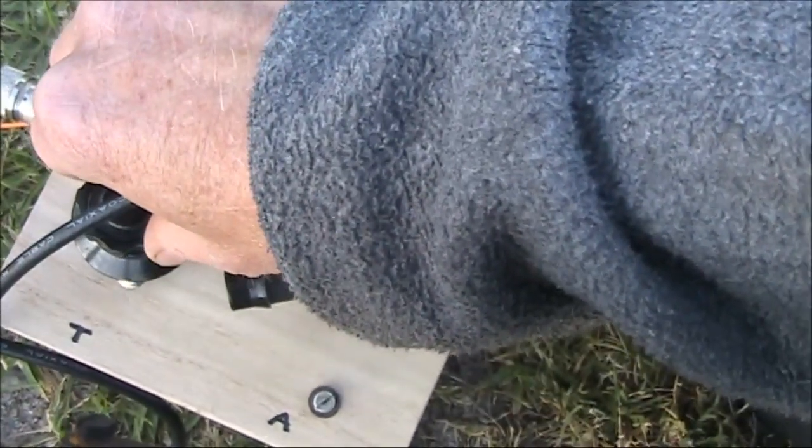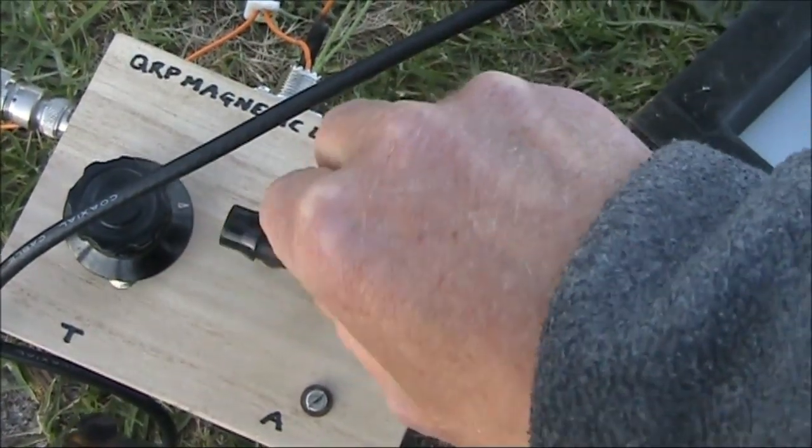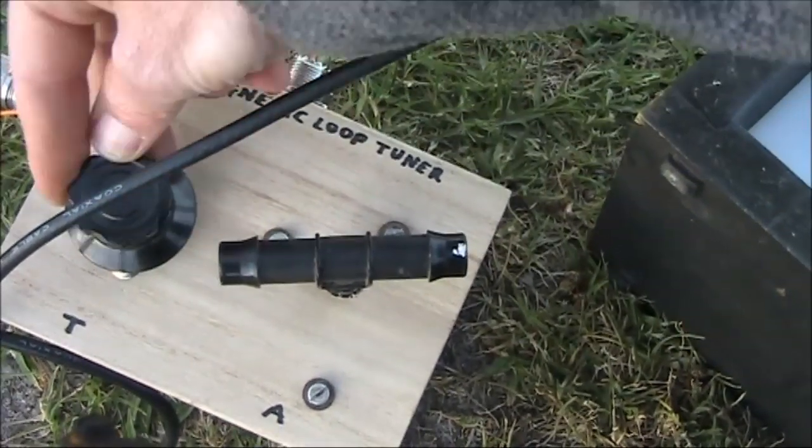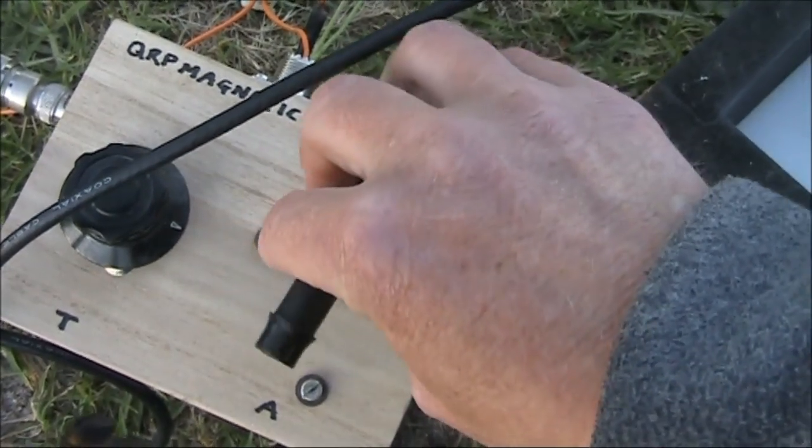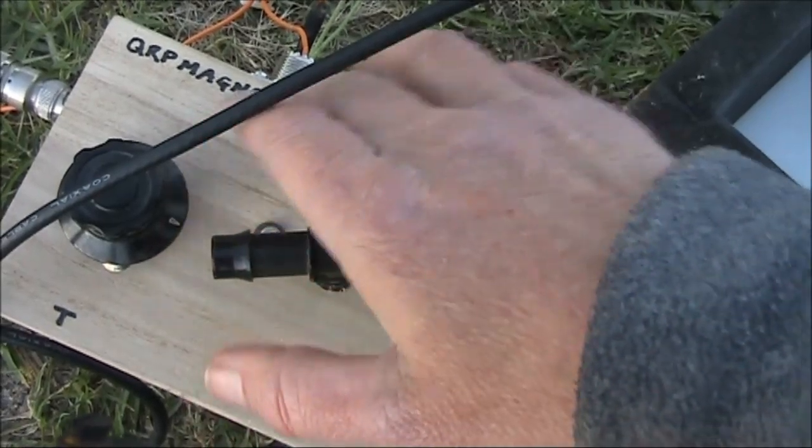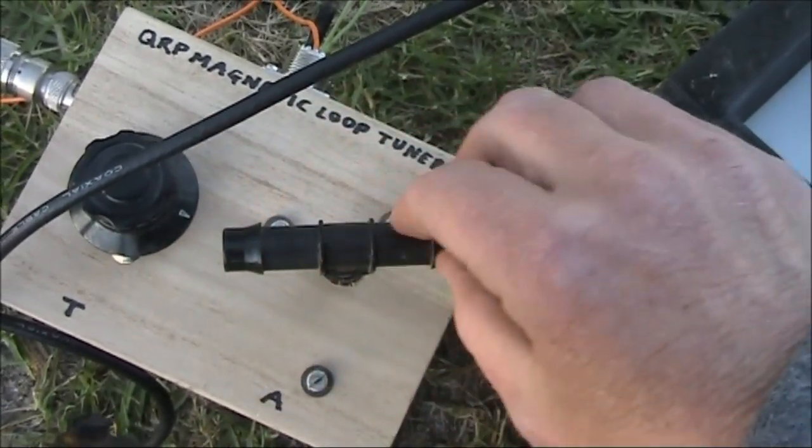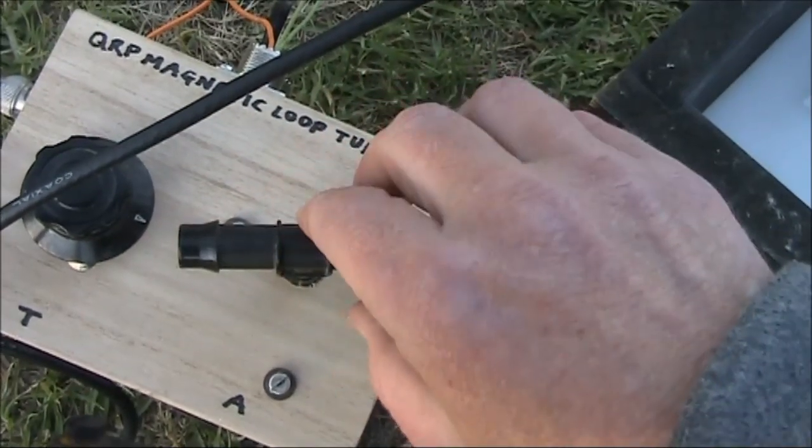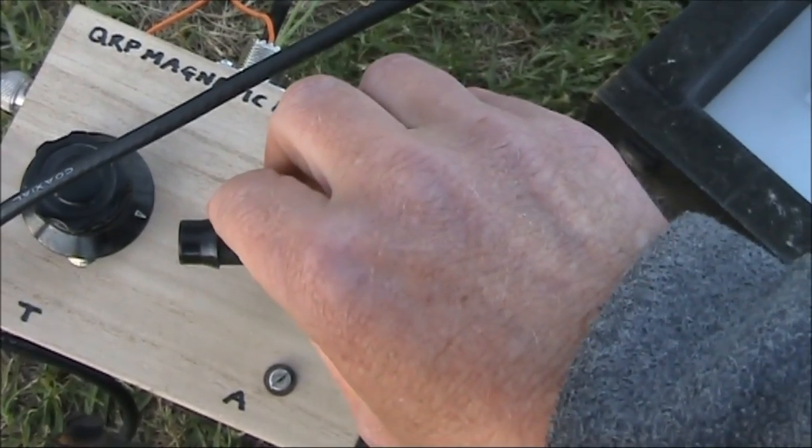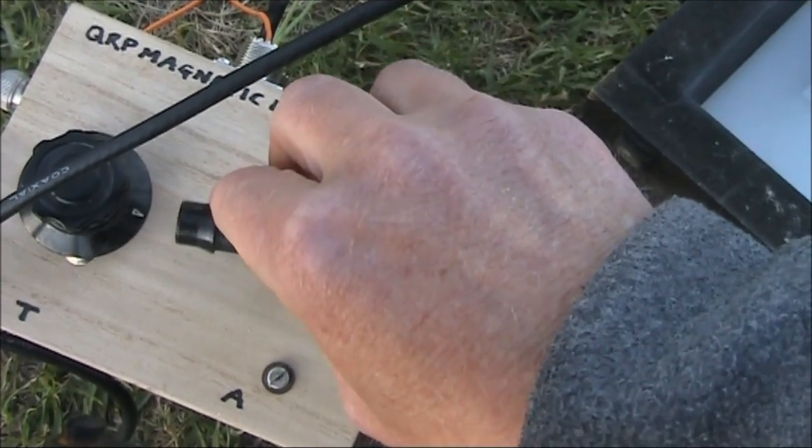I know that this tuner covers at least the top end of the broadcast band. Not sure how low it goes. For that you'd need bigger variable capacitors or maybe some switches to switch in larger parallel capacitors. I didn't intend building this coupling unit for the AM broadcast band. It was really intended for 80 and 160 meters.